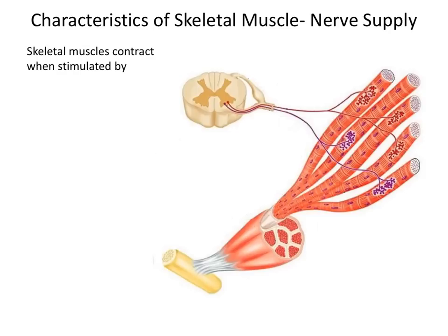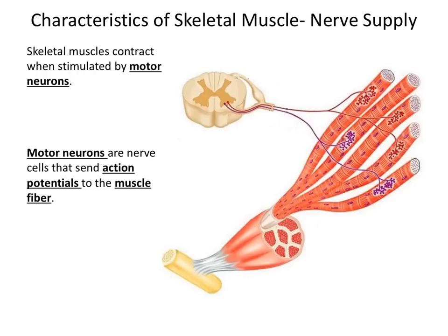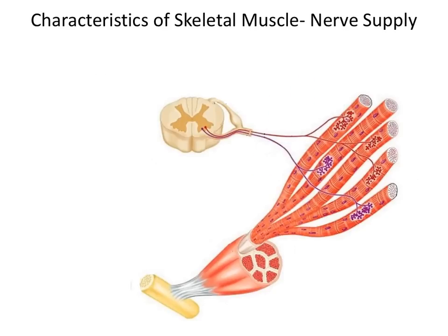So let's take a closer look at the nerve supply for a muscle fiber. Skeletal muscles contract when stimulated by motor neurons. Motor neurons are nerve cells that send action potentials to the muscle fiber. In this illustration shown here, there are two motor neurons — one motor neuron is red, and the other motor neuron is purple. A muscle is not controlled by a single motor neuron; instead, it's controlled by many motor neurons, which control numerous muscle fibers.